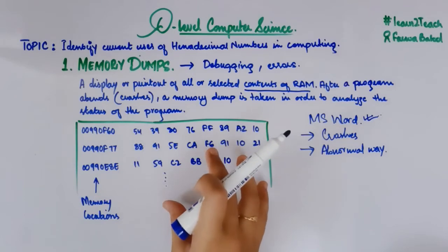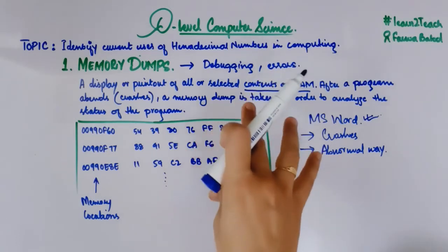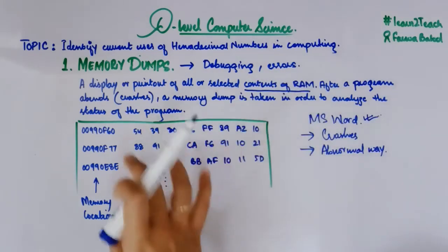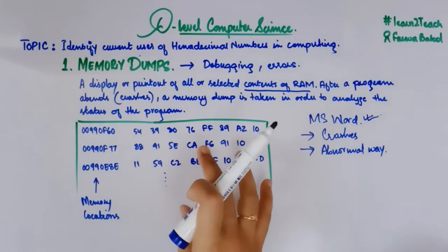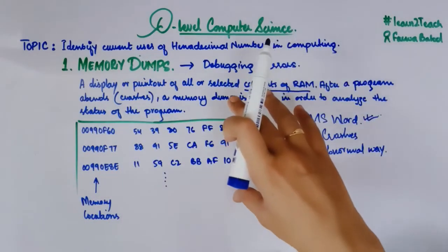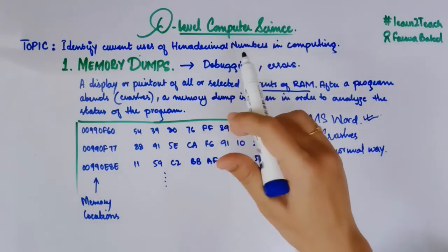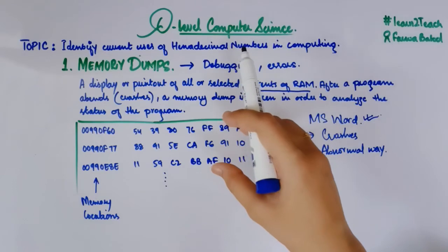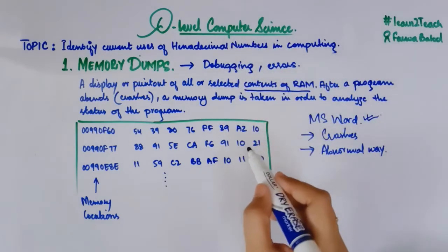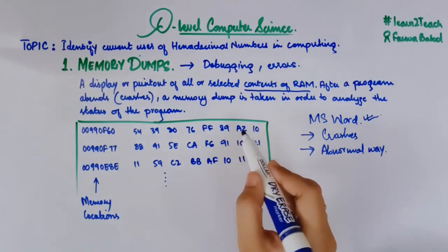So this is a type of memory dump. This is how we see the memory content that is inside the memory, how we see it in my display screen or in a paper when I take a printout of it. This is how we take memory dumps and see the errors that are causing the program to crash or to just end up in a very abnormal way.